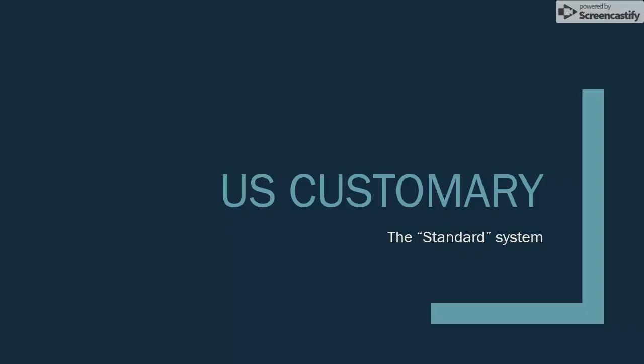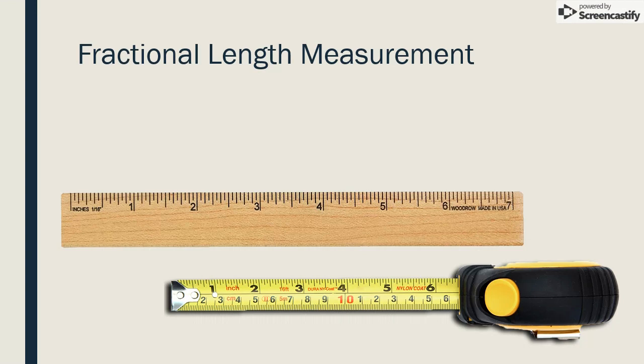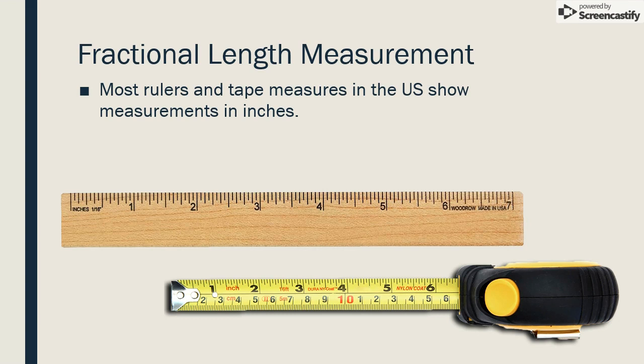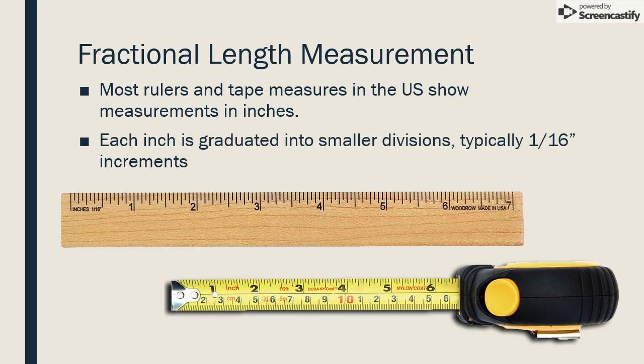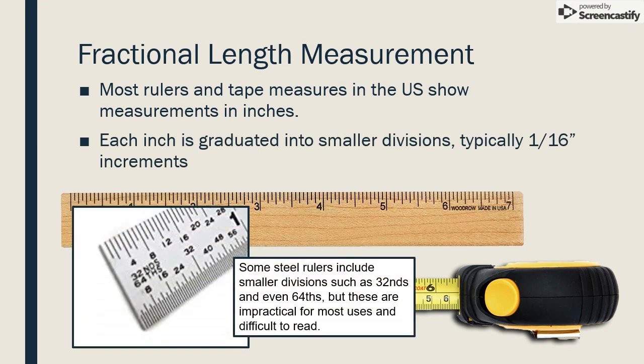Let's take a look at the U.S. customary system. In this presentation, we'll concentrate on linear measurements of length. Two systems are used for measuring length in the U.S., but the U.S. customary system is the most common. This is seen on most rulers and tape measures as inches divided into smaller fractions of an inch. These divisions usually get as small as one-sixteenth inch increments. Some steel rulers include smaller divisions such as 32nds or 64ths, but these can be difficult to read and are not practical for most applications.